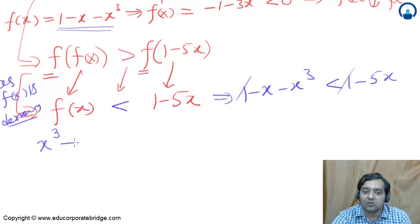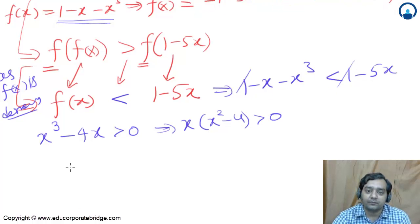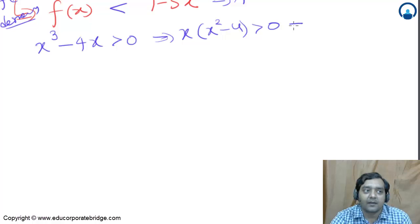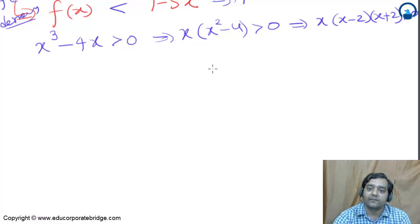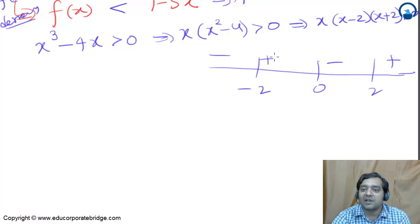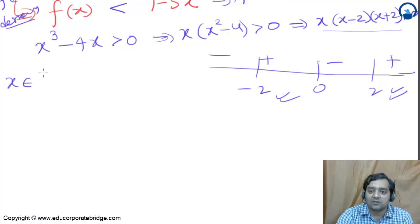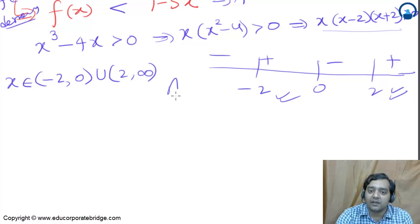f(x) = 1 - x - x³ < 1 - 5x. The ones cancel, giving us -x - x³ < -5x, so x³ - 4x > 0. Taking x common: x(x² - 4) > 0, which is x(x - 2)(x + 2) > 0. Plotting on number line at -2, 0, 2: the solution is x ∈ (-2, 0) ∪ (2, ∞). This is the answer.